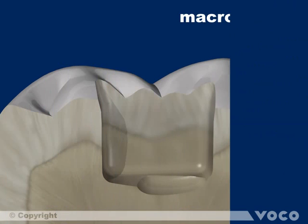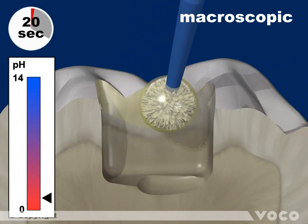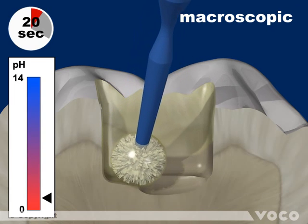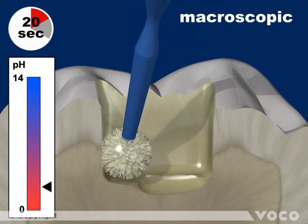Applying the Futurabond U and completely wetting the entire cavity for 20 seconds. The initial acidic pH value rises during this process to a neutral level.